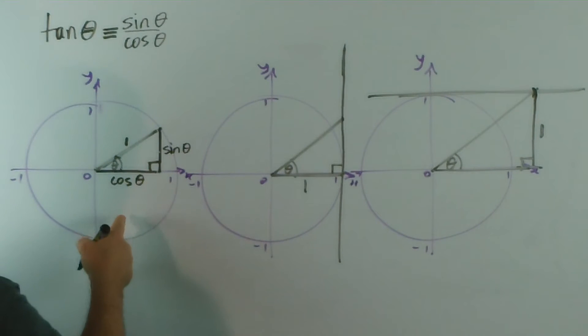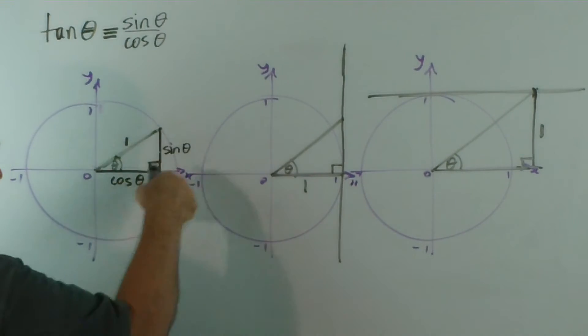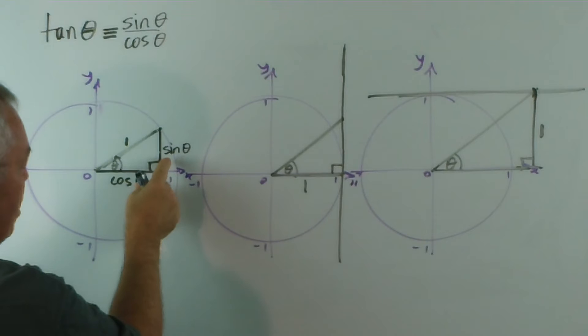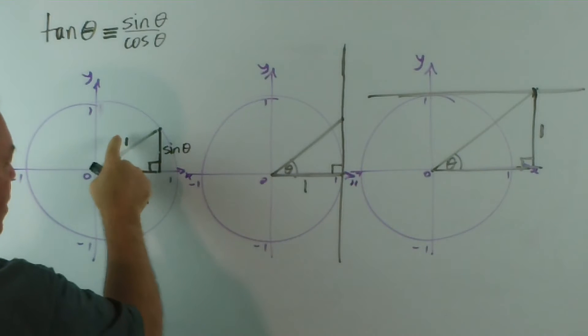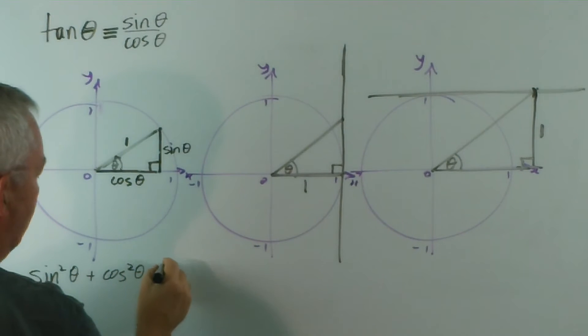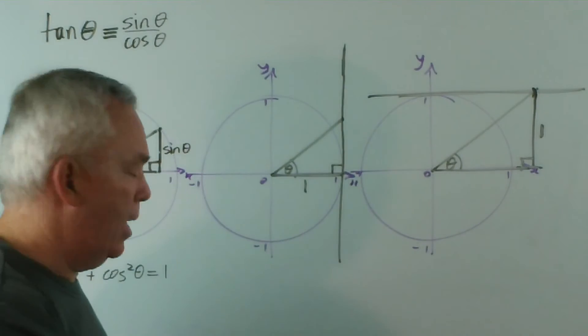And the second identity we get is a Pythagorean identity. By applying Pythagoras' theorem to the right-angled triangle, we can see, since these are the two short sides, that sine squared theta plus cosine squared theta equals one squared, which I'll write here... sine squared theta plus cos squared theta equals one.